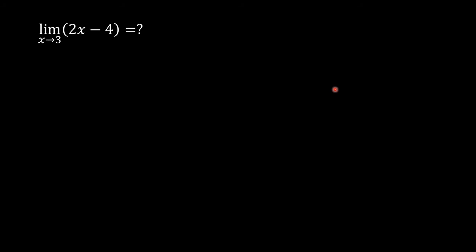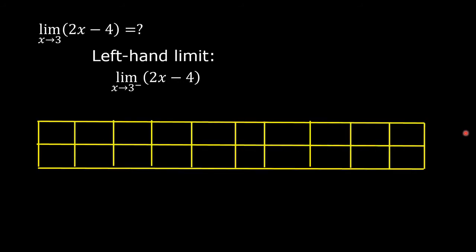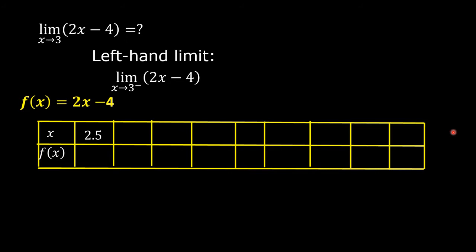Let us estimate the limit of the quantity 2x minus 4 as x approaches 3. Let us first estimate the left-hand limit: the limit of the quantity 2x minus 4 as x approaches 3 from the left. Let us draw a table where f of x equals 2x minus 4. We assign values to x that are to the left of 3. Let us say 2.5 — 2 times 2.5 minus 4 is equal to 1.